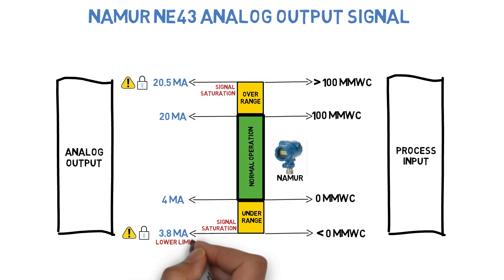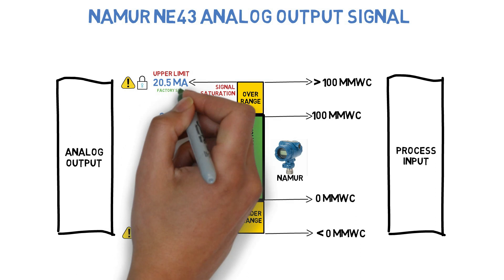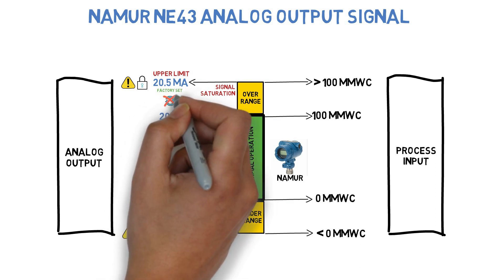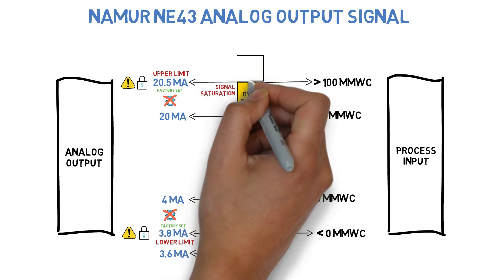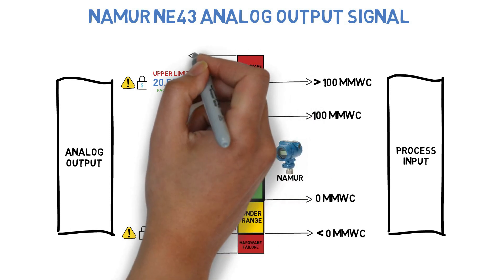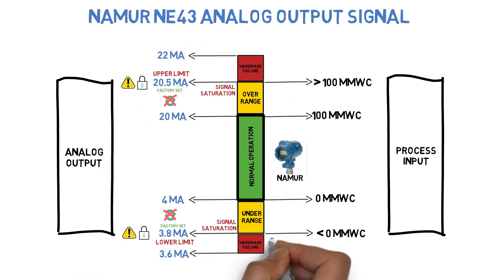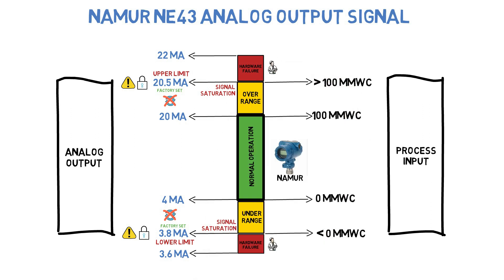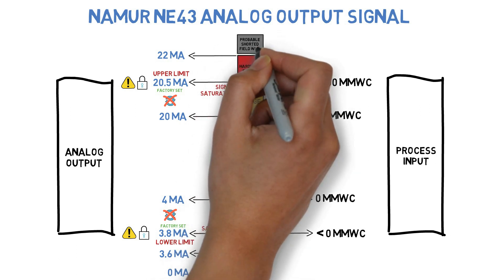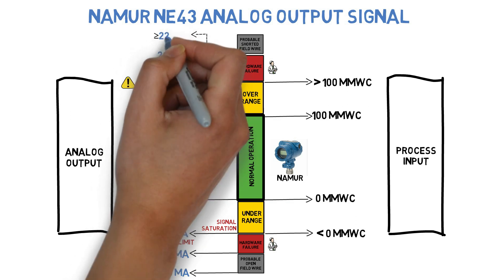The analog output lower limit and upper limit are factory set, and cannot be changed. On hardware failure, the transmitter output changes between 3.6 and 3.8 mA. This high-low selection is user-selectable through transmitter configuration. If the field wire is open, the transmitter output changes between 3.6 and 0 mA. If the field wire is short-circuited, the transmitter output shall be greater than or equal to 22 mA.